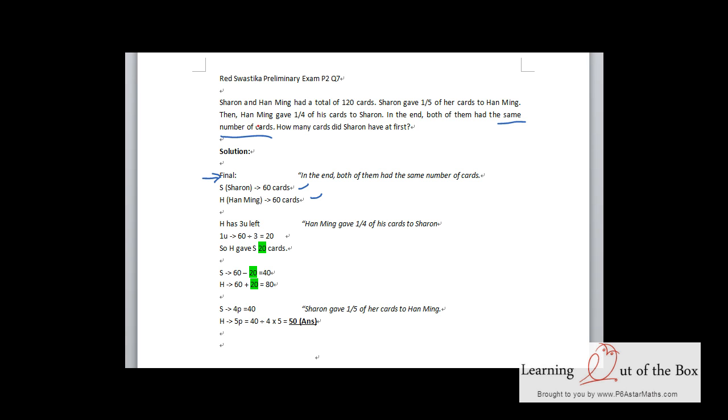Then, what happened before that? Han Ming gave one-quarter of his cards to Sharon. So Han Ming should have three-quarters left, and we take it as three units.